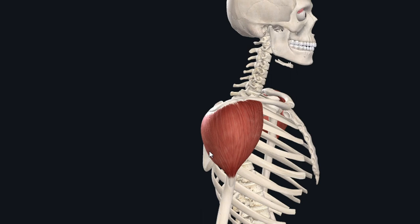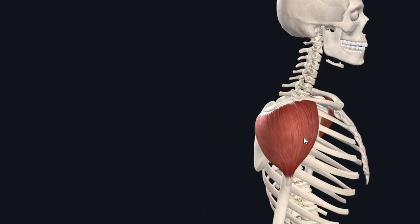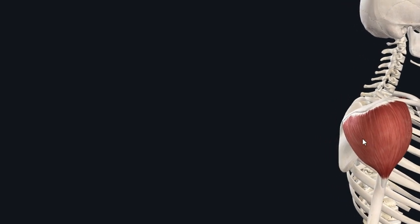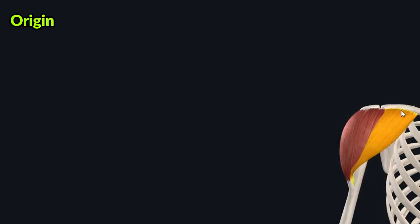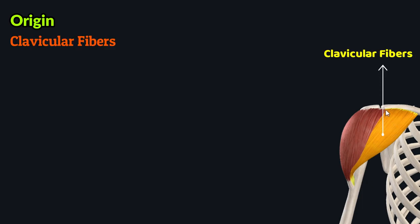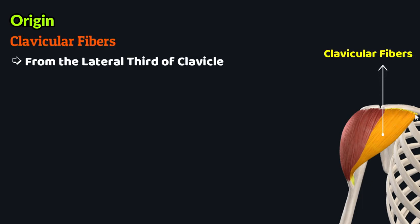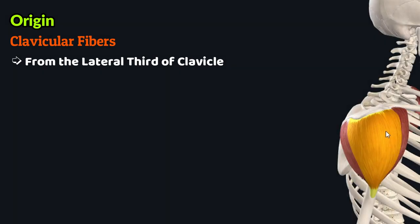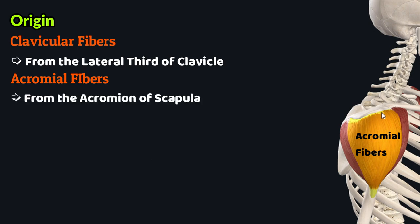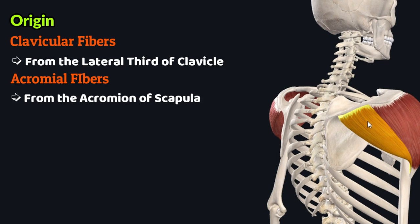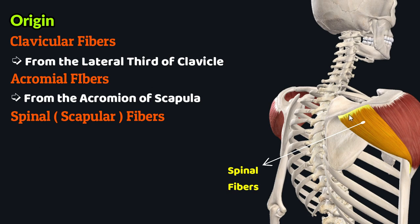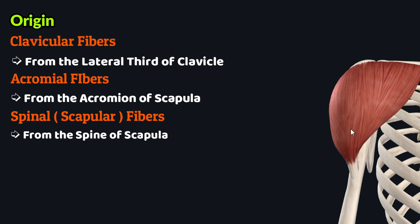Anatomically, the deltoid muscle consists of three sets of fibers, named according to their origin from different areas. On the anterior aspect are the clavicular fibers, which originate from the lateral third of the clavicle. On the lateral aspect are the acromial fibers, which originate from the acromion of the scapula. Towards the posterior side are the spinal or scapular fibers, which originate from the spine of the scapula. These three sets of fibers then converge to form a single short tendon.